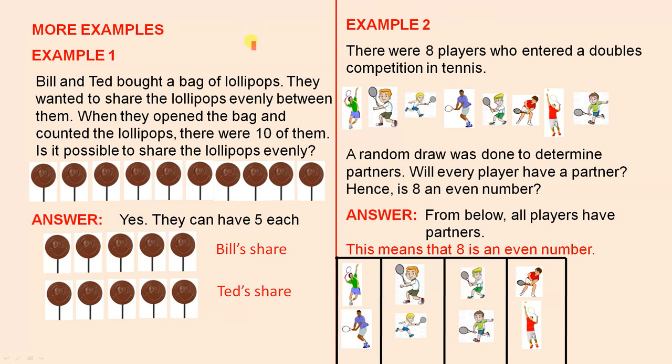More examples. Example one. Bill and Ted bought a bag of lollipops. They wanted to share the lollipops evenly between them. When they opened the bag and counted the lollipops, there were ten of them. Is it possible to share the lollipops evenly?